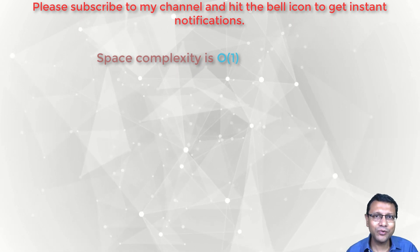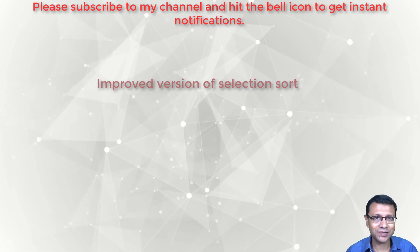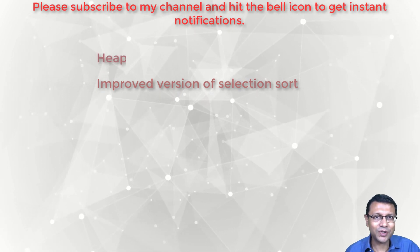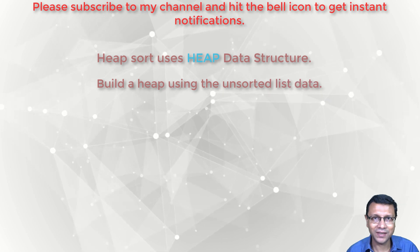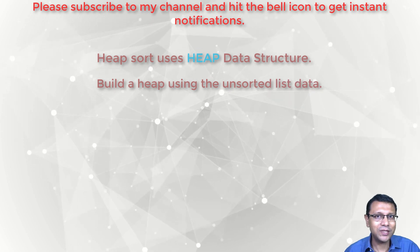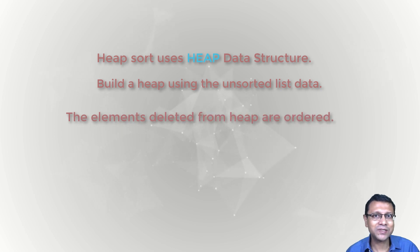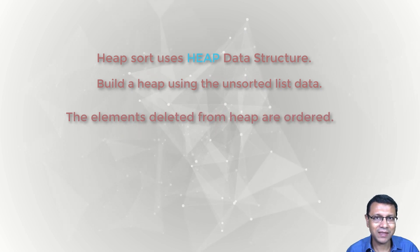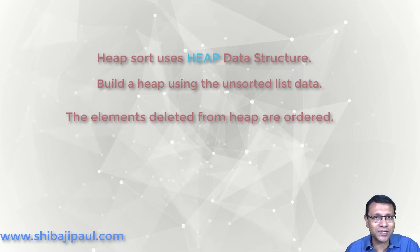Heap sort is an improved version of selection sort that uses the heap data structure. What we do in heap sort is that we build a heap at the very beginning with the unsorted data in the list or array. And then we go on deleting the elements from the heap one at a time, and we place these deleted elements into the sorted section.